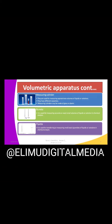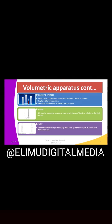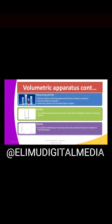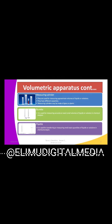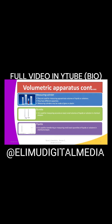The third one is a pipette. A pipette is used for transferring or measuring small exact quantities of liquids or solutions in chemical analysis. Just like a burette, these solutions are also used in chemical analysis. The similarity between a burette and a pipette is that, one, they measure exact quantities of liquids or solutions, and two, they only measure small quantities.